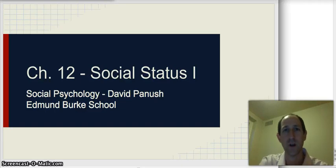Hello, this is David Panoush with another lecture from social psychology or psychology at Edmund Burke's school. We're looking at Robert Wright's The Moral Animal, and this is part one of chapter twelve, Social Status.